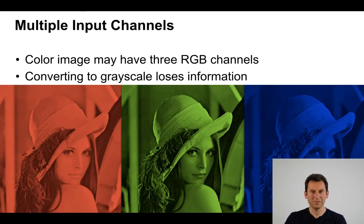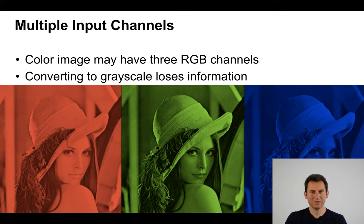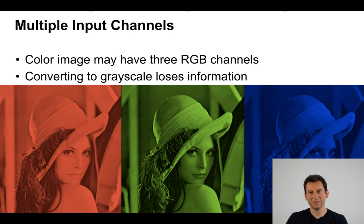Here is the same image split into red, green, and blue channels, and you can see that there are different types of information in those three channels. If we were to treat the image just as grayscale we would lose a lot of information. But if we have a convolutional network, we need a way to deal with it.